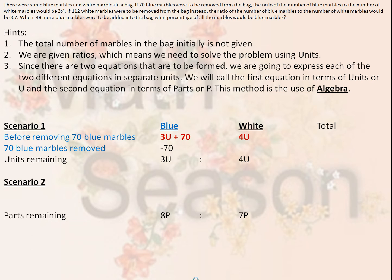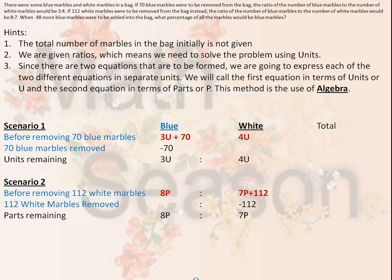Under Scenario 2, in the end we had 8 parts and 7 parts. Since 112 white marbles were removed, before removing the white marbles we had 8p blue marbles and 7p plus 112 white marbles.